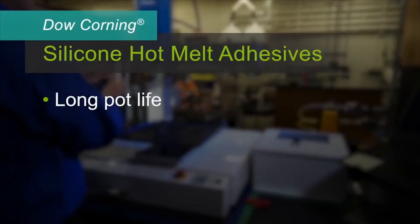Silicone hot melt adhesives have a long pot life, especially compared with polyurethane hot melt products. This enables longer manufacturing time because once the material is heated, it can be used for up to 24 hours.